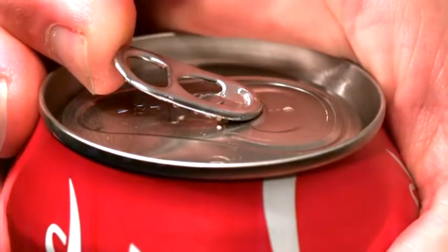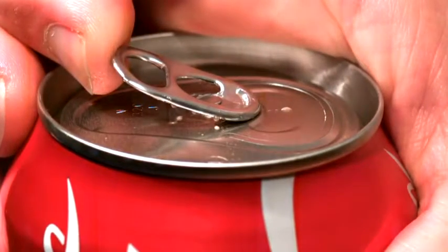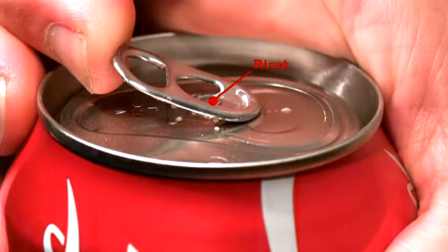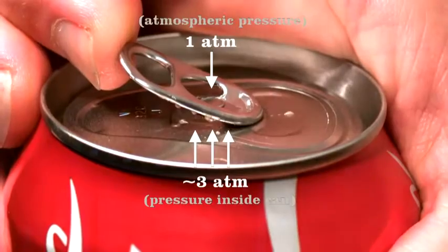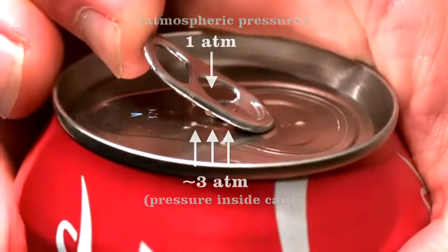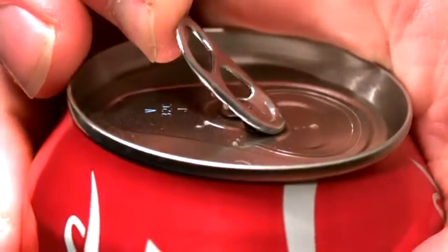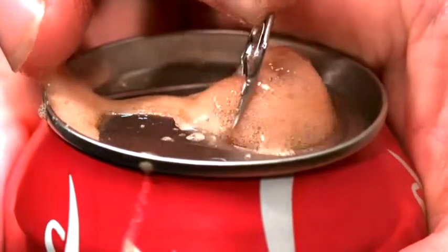From the side, you can see clearly how the tab, when working as a second class lever, lifts the rivet. In fact, part of the reason this clever design works is because the pressure inside the can helps to force the rivet up, which in turn depresses the outer edge of the top until it vents the can, at which point the tab changes to a first class lever.